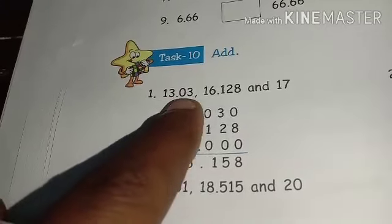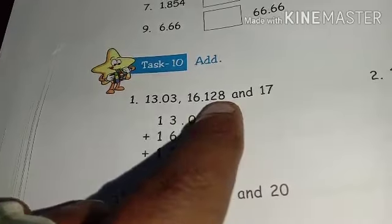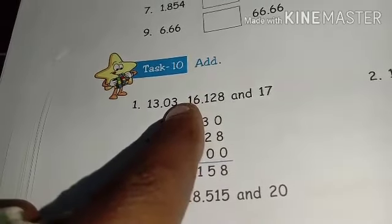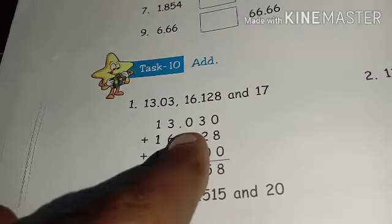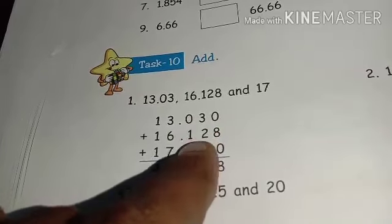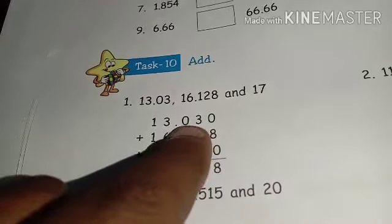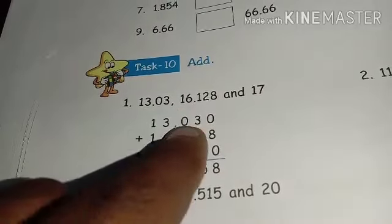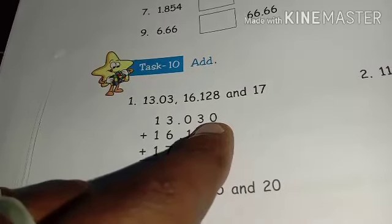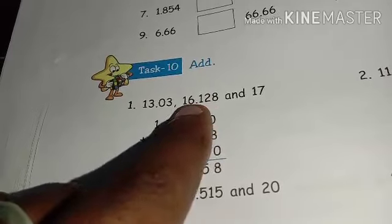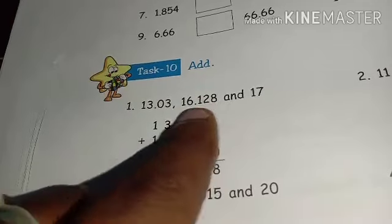There's 13.03, 16.128, and 17. So I'm going to write the decimal. 13.030, so 13.03 is right. There's a zero. This is highest decimal. 16.128, this is the number of points are right, there's like decimal score.